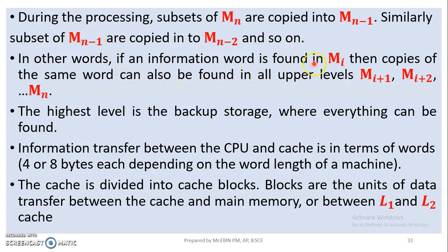In other words, if an information word is found in M-i, then copies of the same word can also be found in all upper levels — that is, M-i+1, M-i+2, and so on, up to Mn. This is the inclusion property.